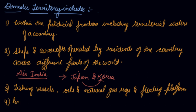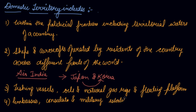The fourth component includes embassies, consulates, and military establishments of the country located abroad. For example, if India has an embassy in the USA, it is part of the domestic territory of India. Similarly, the embassy of the USA in India is part of the domestic territory of the USA. Income generated from Indian embassies located in different countries will be treated as domestic income.